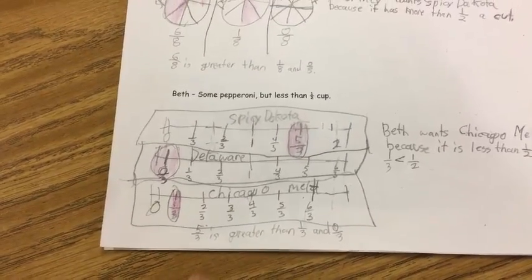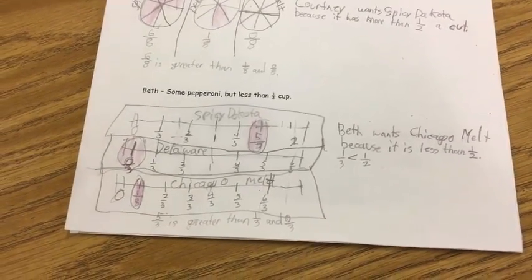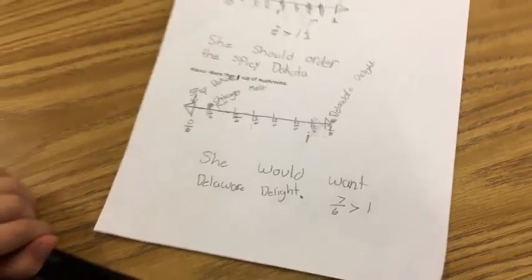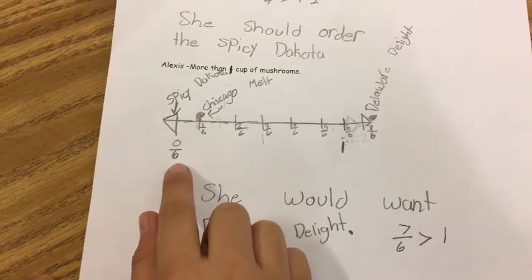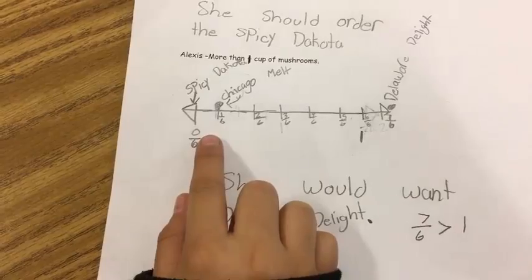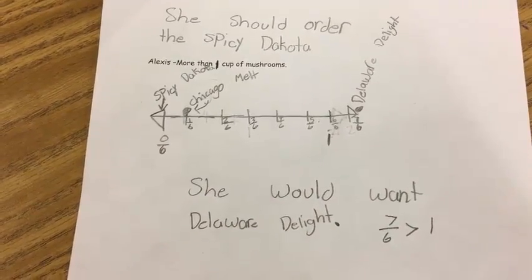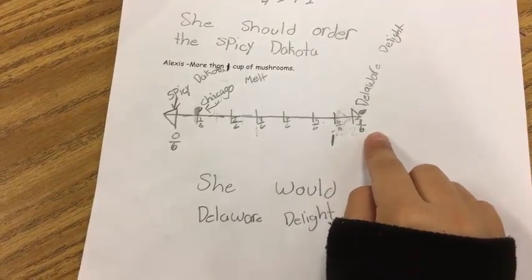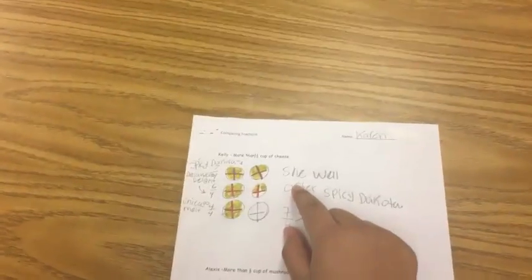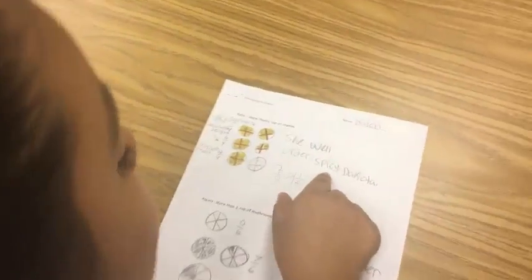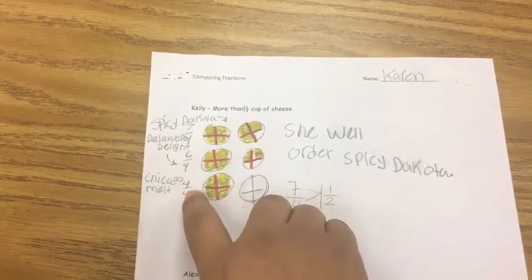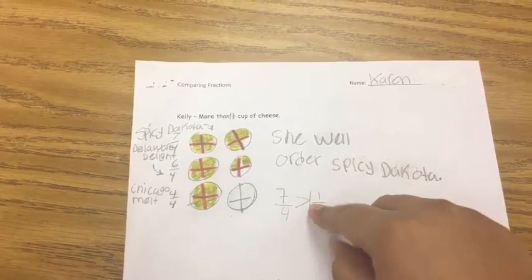What about the Chicago melt? The Chicago melt is 1 third, so she would want the Chicago melt. Yes, because 1 third is less than 1 half. So if Alexis wants a pizza that has more than 1 cup of mushrooms, what pizza would she buy? She would want the Delaware delight. How do you know? Because this one has 0 sixths and this one only has 1 sixth. So how much does the Delaware delight have? 7 sixths. And how do you know that 7 sixths is greater than 1? Because the numerator is bigger than the denominator. So if Kelly wants more than one and a half cups of cheese, what pizza will she order? The spicy Dakota — because spicy Dakota is 7 fourths, Delaware delight is 6 fourths, and Chicago melt is 4 fourths. So 7 fourths is greater than 1 and a half.